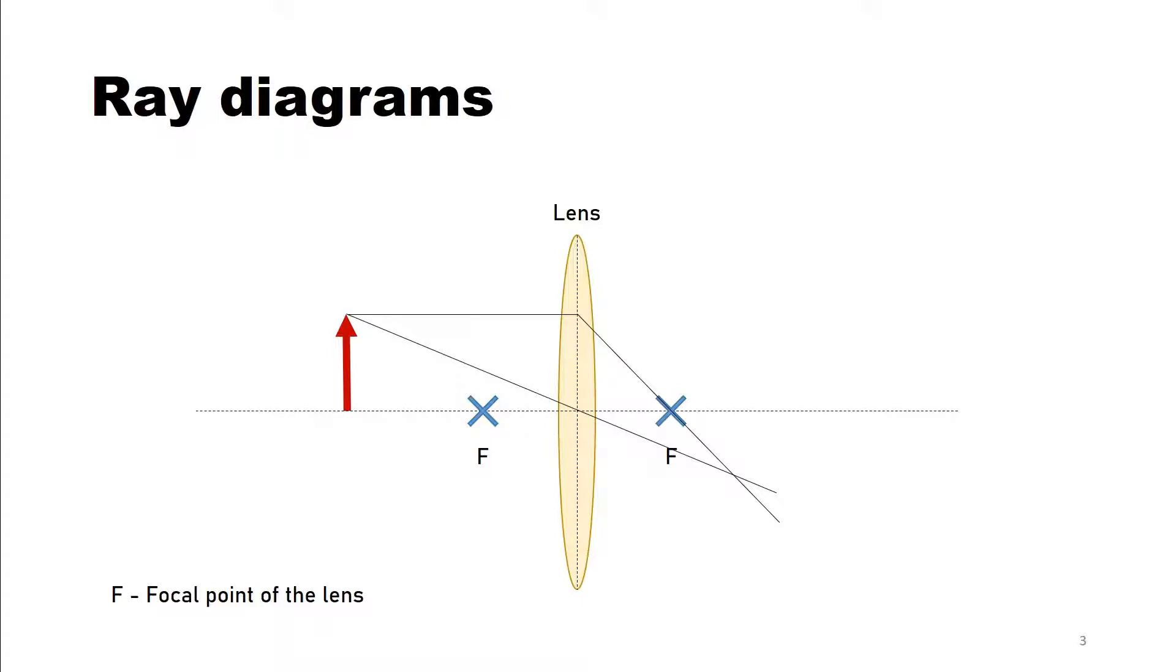But just to be sure, we can draw a third light path from the tip of our object. This time through the focal point in front of the lens. And from there the light ray will be refracted and it continues horizontally. And surprise, all three rays converge in the same point. And that is where the lens will display the tip of our arrow in the image.